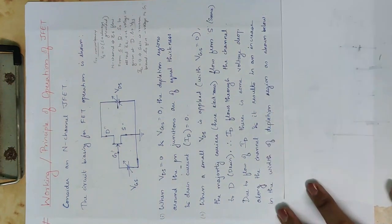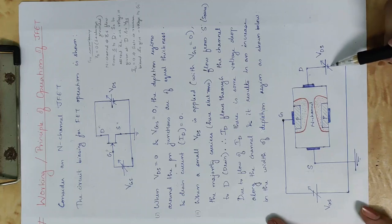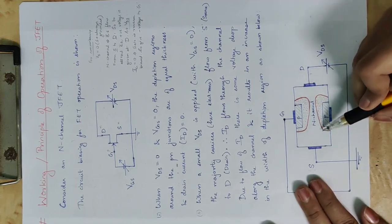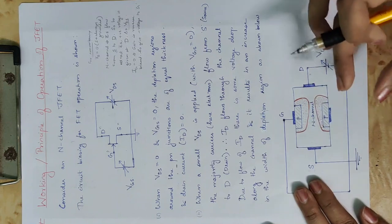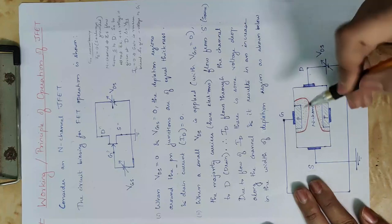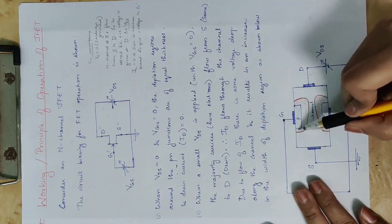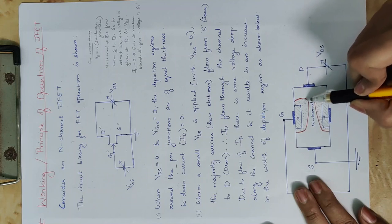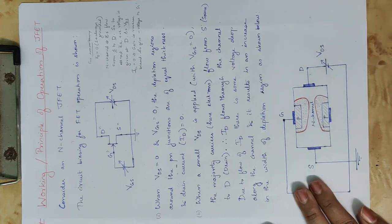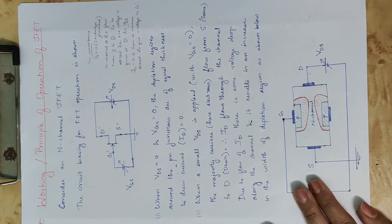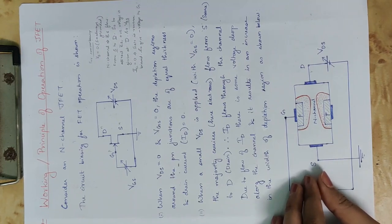This results in an increase in the width of the depletion region. As we apply VDS across the source and drain, the PN junction depletion region increases in width. The depletion region is shown in red and its width is no longer uniform — the depletion region growth is not uniform along the channel.